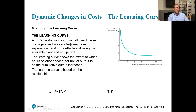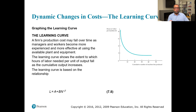Production costs fall over time as managers and workers become more experienced and effective at using available equipment. The learning curve shows how hours of labor needed per unit of output fall as cumulative output increases. It is based on the relationship L = a + b·N^(−β). In practice, when starting something new, you are hesitant and slow, but after repeating it several times, your speed and efficiency increase and costs go down.